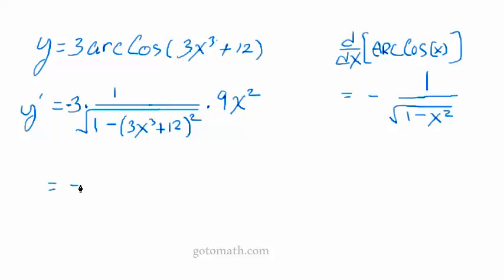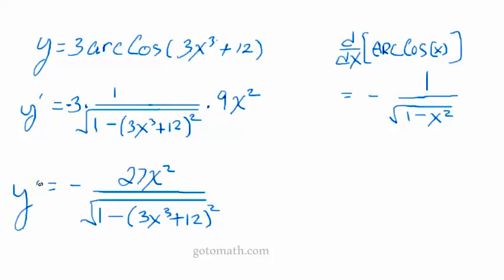Now what we can do, we'll leave that negative out front. We've got 3 times 1 times 9, which is 27X squared. Of course that's all over 1 minus 3X cubed plus 12 squared. And that is our derivative.